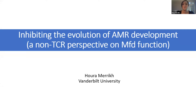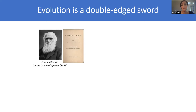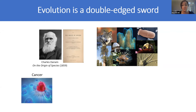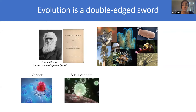Evolution is a double-edged sword. The fundamental concept of natural selection was described back in the 1800s, and it's been fantastic — we have all this beautiful diversity in the world — but it also is a problem in the clinic. Of course, we all know that evolution causes cancer; cancer is a disease of evolution. It can lead to virus variants, which is very relevant today with the pandemic. And in our case, we're interested in antimicrobial resistance development.